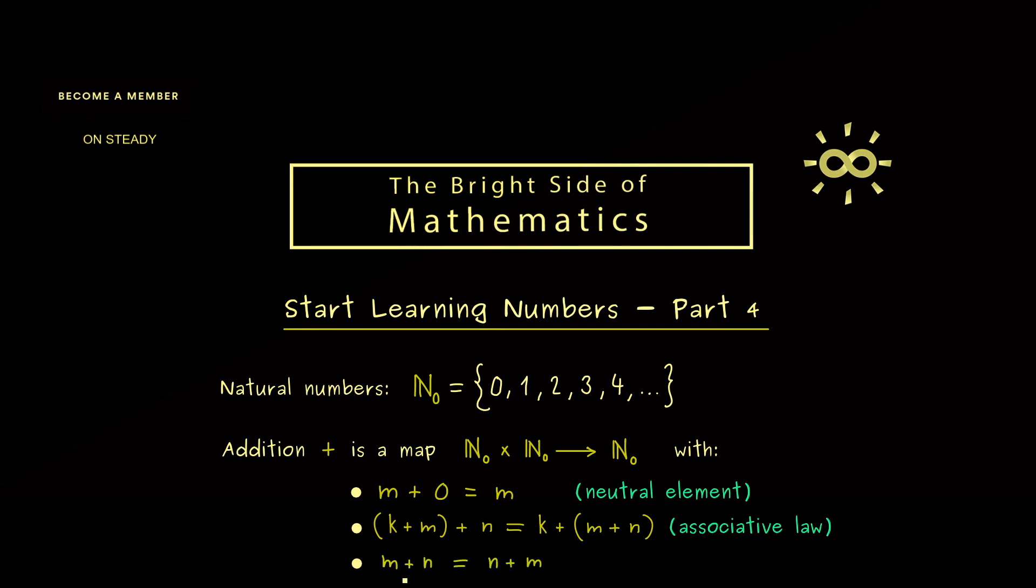And it tells us that in fact we are allowed to change the order. Now something like this we always call the commutative law.